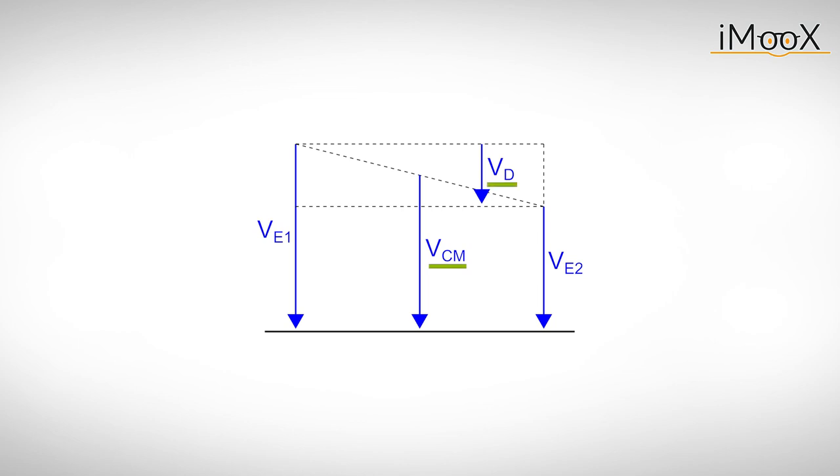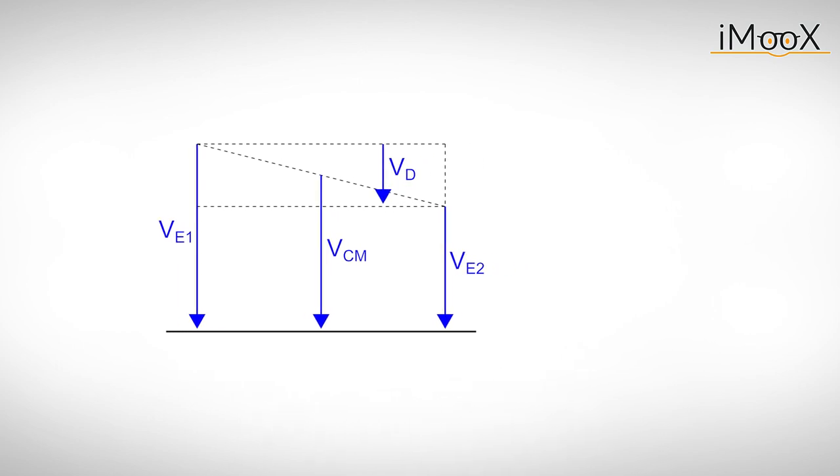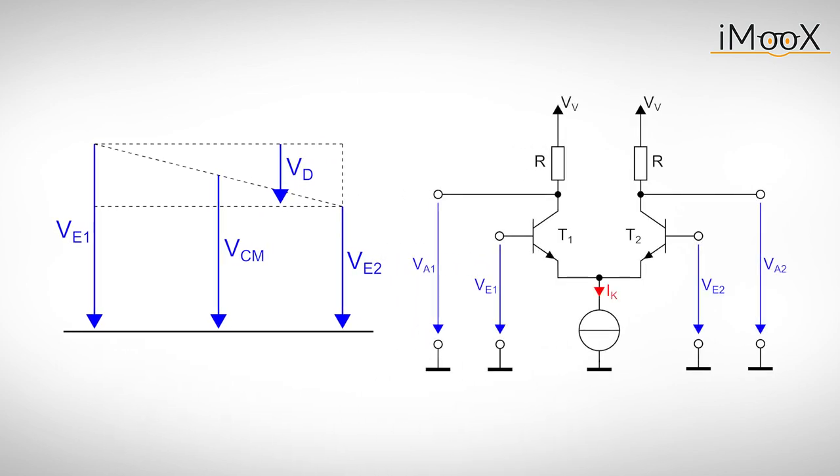The common mode voltage VCM represents the mean voltage of both inputs. The differential mode voltage VD is the difference between VE1 and VE2. Expressing the input voltages this way will make the upcoming analysis of the differential amplifier much easier.